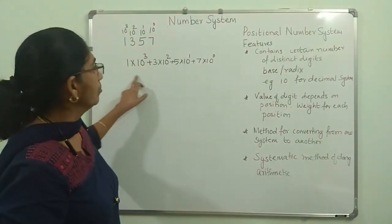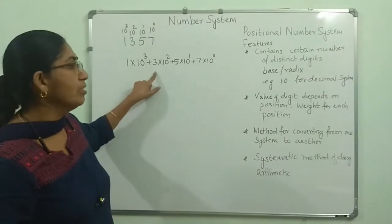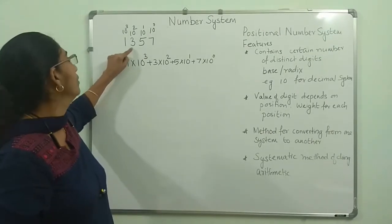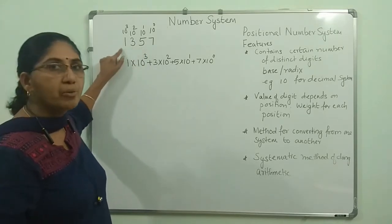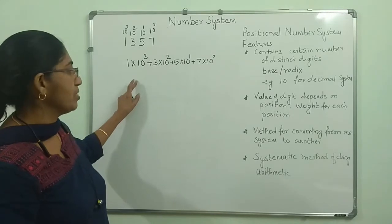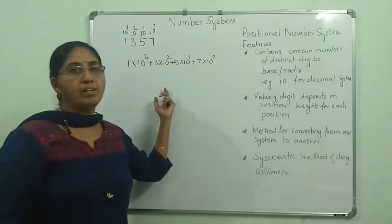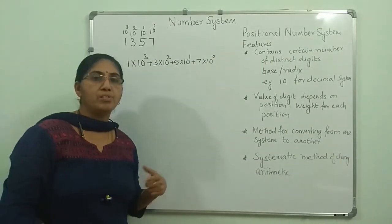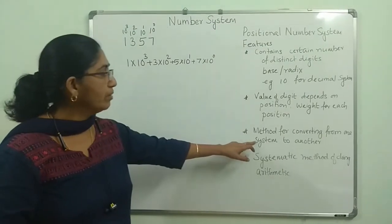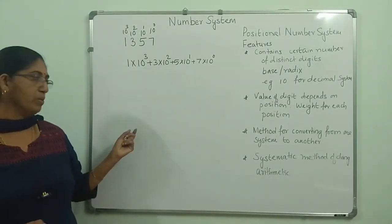This is the peculiarity of the positional number system — according to the position, it has a particular weight or value. It is not the independent individual value of 1, 3, 5, or 7, but depending upon its position, its value changes. That is one feature. Then, if you want to convert from the decimal system to the binary system, or binary to decimal, there is a particular method — that is another feature of the positional number system.